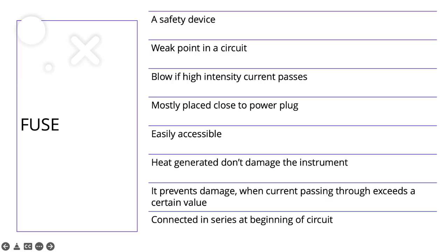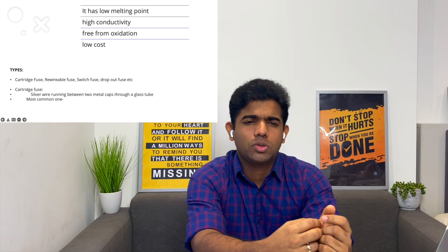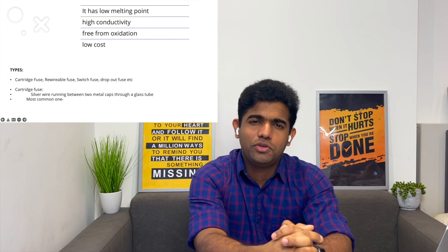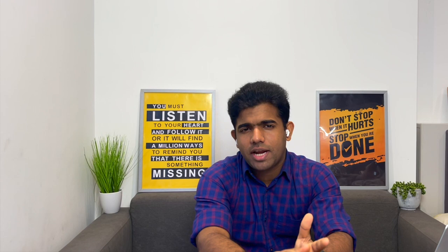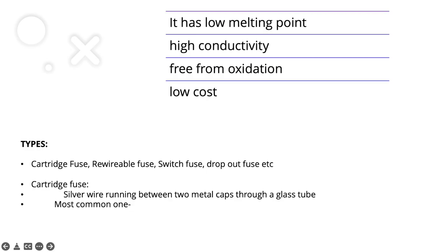The key characteristics of a fuse are: it prevents damage when current exceeds a certain value; it has a low melting point so the heat can melt it; it has high conductivity; it should be free from oxidization; and it should be of low cost. There are different types of fuses: the cartridge fuse, re-wireable fuse, switch fuse, dropout fuse, and others. The most important one is the cartridge type, commonly used in electrotherapy and household devices.